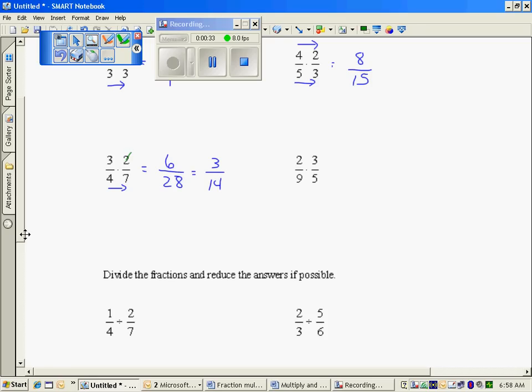One thing I could have done earlier, change this to a one, change this to a two, because two divided by two is one, two into four is two, and reduce earlier and get the three and the fourteenth.